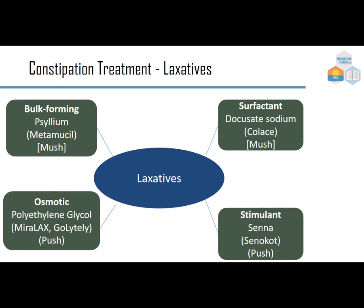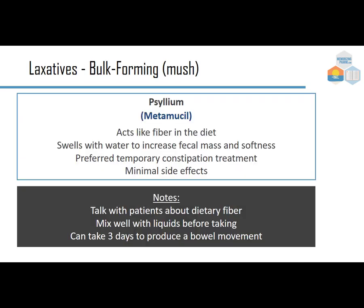Specific agents: bulk-forming psyllium (Metamucil) acts like dietary fiber; surfactant docusate sodium (Colace) is often given with opioids; osmotic polyethylene glycol appears as Miralax over the counter or as GoLYTELY for bowel prep before colonoscopy — the same drug with very different intentions. The stimulant senna provides more of a push when bulk-forming and surfactant approaches fail.